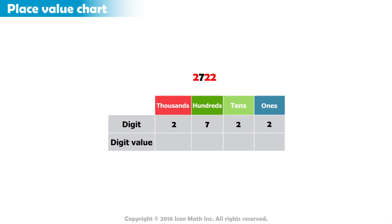If we put it on a place value chart, we can see that the digit 2 in the ones place has a value of 2, while in the tens place it has a value of 20, and in the thousands place it has a value of 2,000.